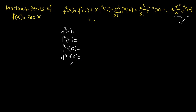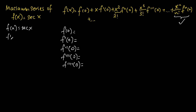Then differentiating the function three times and evaluating at x equals 0, and differentiating the function four times and evaluating at x equals 0. So let's start off with f(x). We know f(x) equals secant x, and then differentiating the function one time we get secant x tangent x.